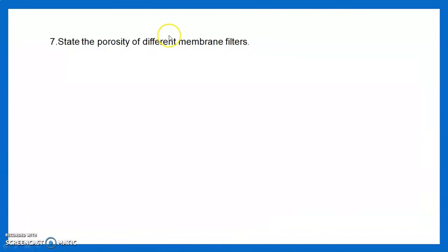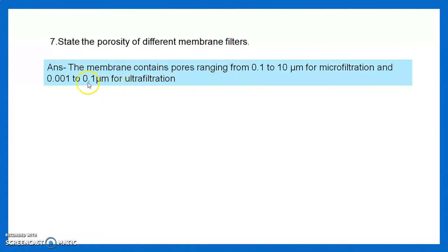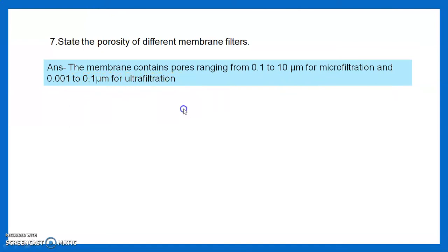Question 7: State the porosity of different membrane filters. Membrane filters contain pore sizes ranging from 0.1 to 10 micrometers for microfiltration, and 0.001 to 0.1 micrometers for ultrafiltration.